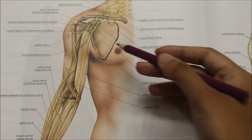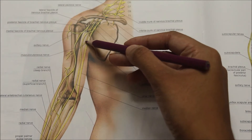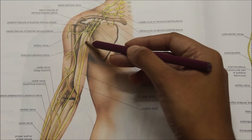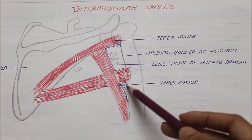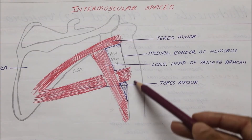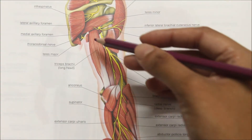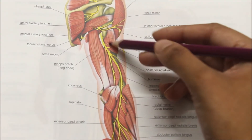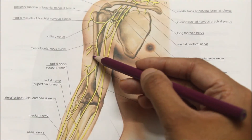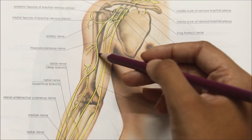Now moving on to the relations of the radial nerve. In the axilla it lies posterior to the axillary artery. In the upper part of the arm it lies posterior to the brachial artery. In the lower triangular space it is accompanied by the profunda brachii vessels. As the radial nerve passes through the lower triangular space, it is related medially to the long head of the triceps, laterally to the shaft of the humerus, and superiorly to the teres major. In the spiral groove, the radial nerve is related above with the lateral head of the triceps muscle and below with the medial head of the triceps muscle.